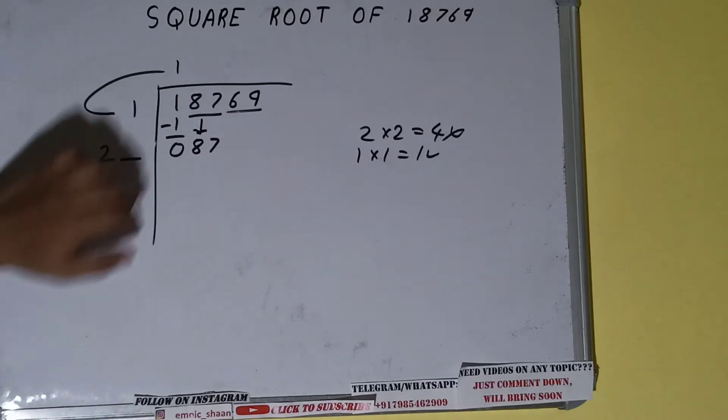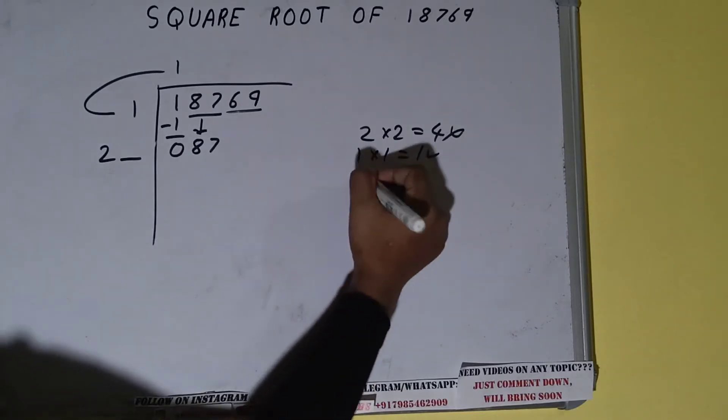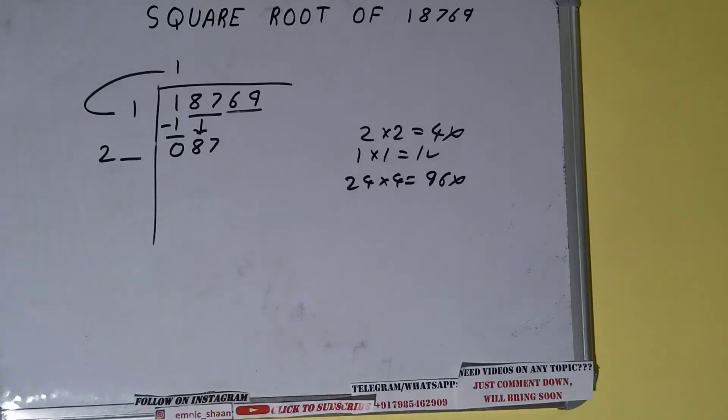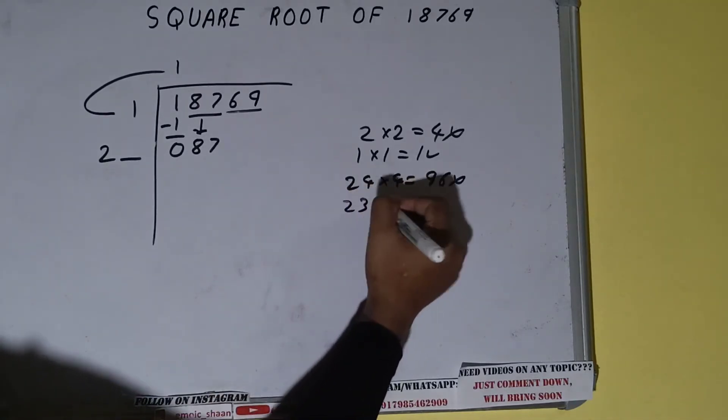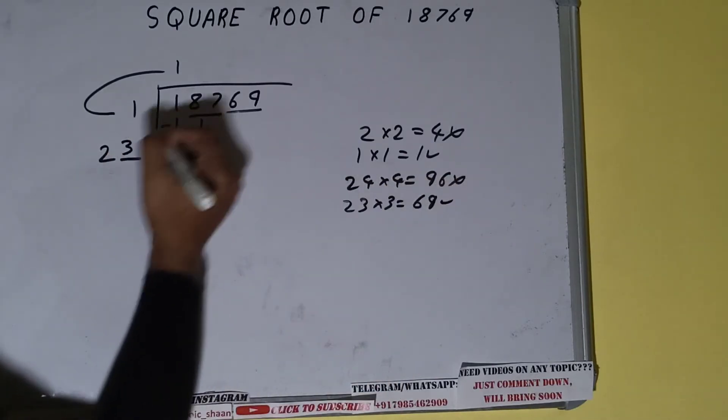Now whatever number we write here, we have to write here also. So we can try 4 times, that is 24 into 4, it will be 96, which is greater than 87, so we cannot use it. Let's try 3 times. So 23 into 3 we can try, it will be 69, which is good to use.